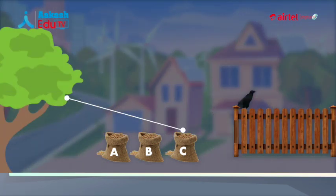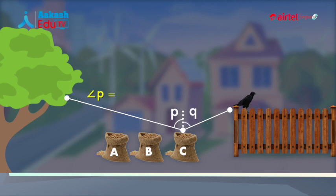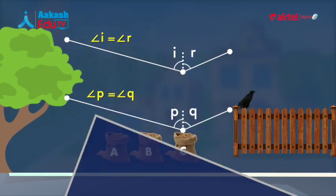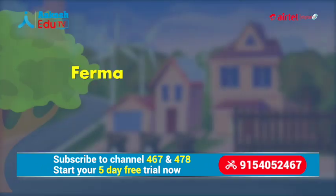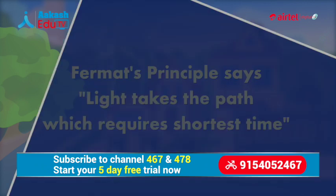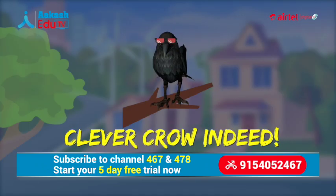For opting C and finally to the fence, aap dekhenge angle P ki value angle Q ke equal hai. In other words, this path resembles the path of light where incident and reflected angles are equal — the famous Fermat's principle of optics ke according this takes the minimum time. Clever crow indeed.